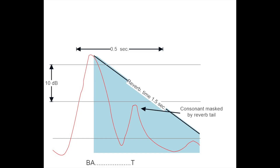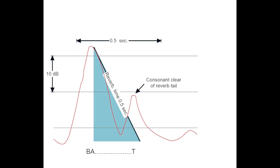So let's talk about what's going on when I say the word bat. This is showing the word bat over time. You can see as it starts, bat starts out loud, but the T is softer. And if we've got a reverberation time of one and a half seconds, the room just covers it. The T is masked — that consonant is gone because of the reverberation tail. So when we get the room under control, the T is revealed. The consonant is now unveiled, and articulation is now reachable, obtainable.